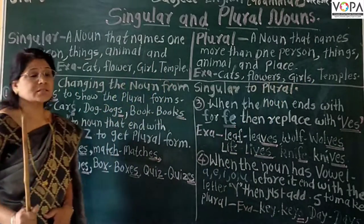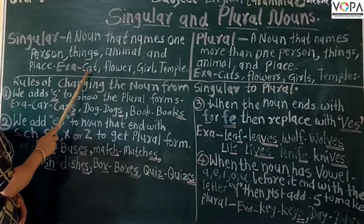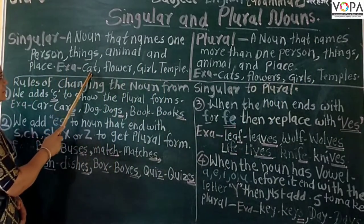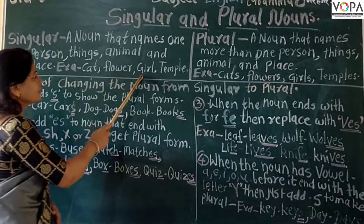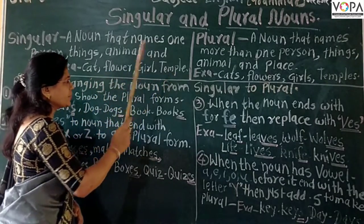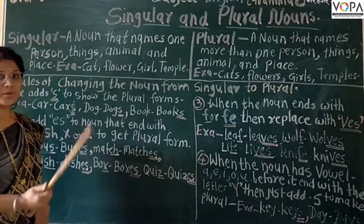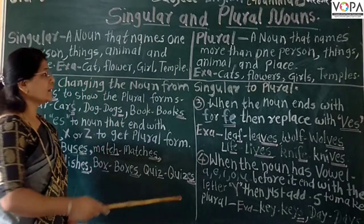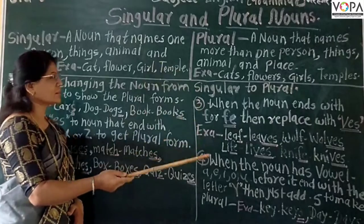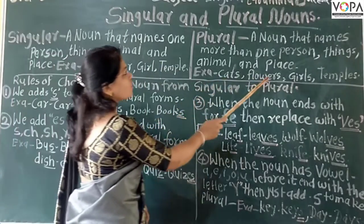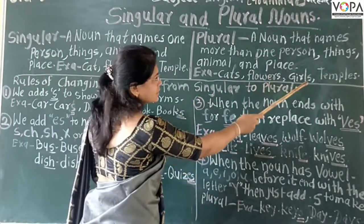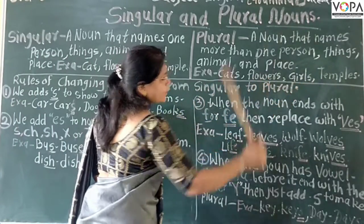Just as a singular noun applied — cats, flowers, girls, tapers. Plural nouns are: cats, flowers, girls, and tapers.